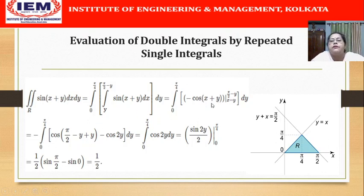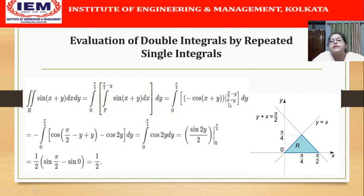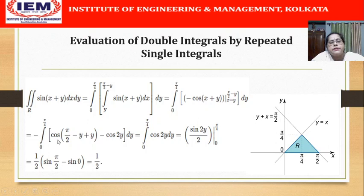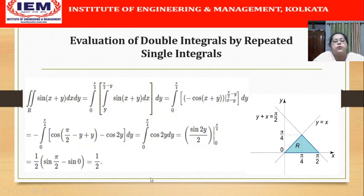Integrating cos(2y) from 0 to π/4 gives sin(2y)/2 evaluated from 0 to π/4. At y = π/4, sin(π/2)/2 = 1/2; at y = 0, sin(0)/2 = 0. Therefore, our final answer is 1/2.